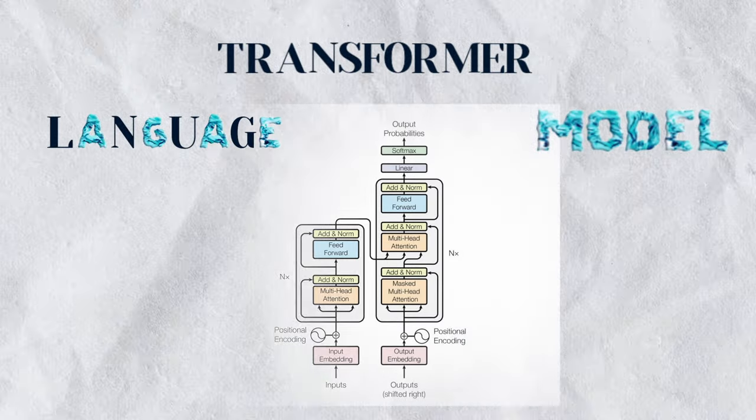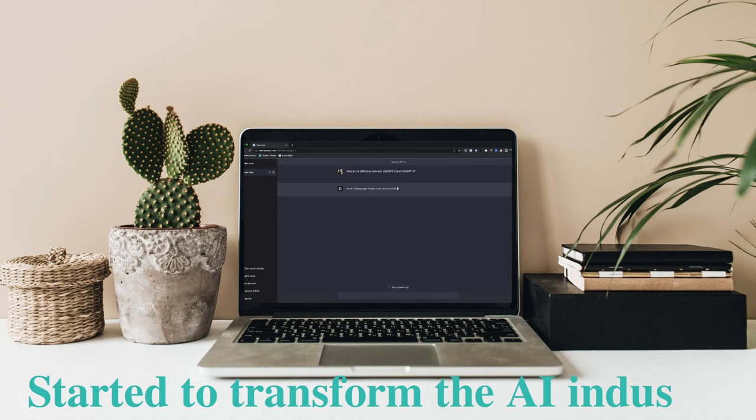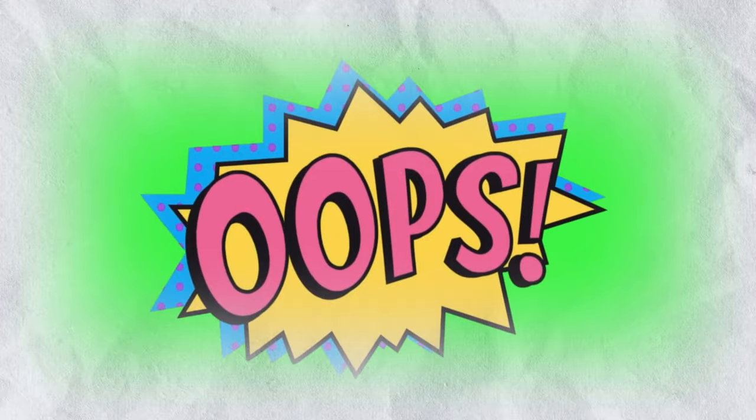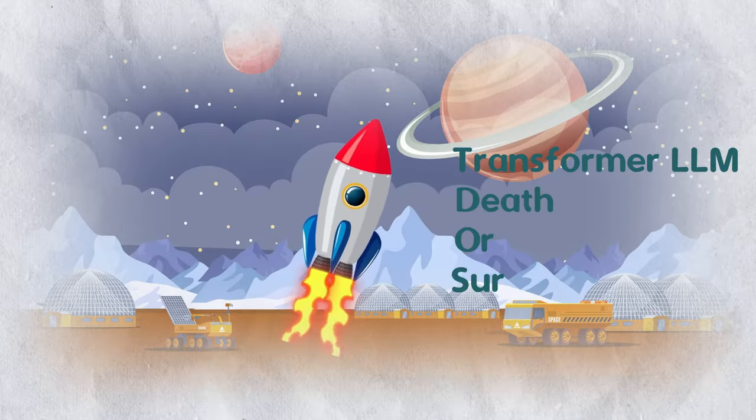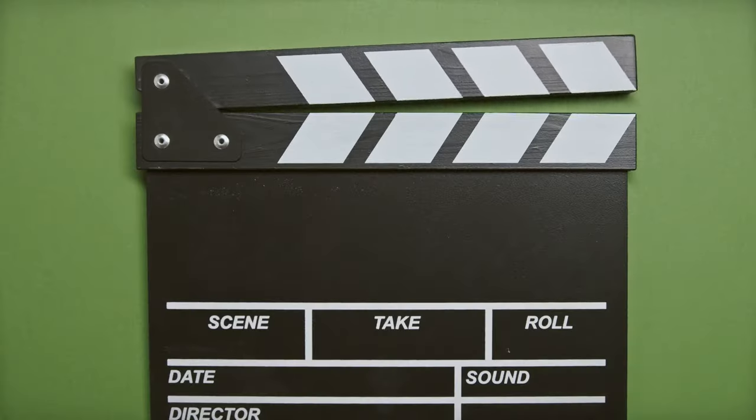The transformer language model started to transform the AI industry, but it has one main problem that can make it go extinct even before it blasts off in 2024. Let's unwrap this.